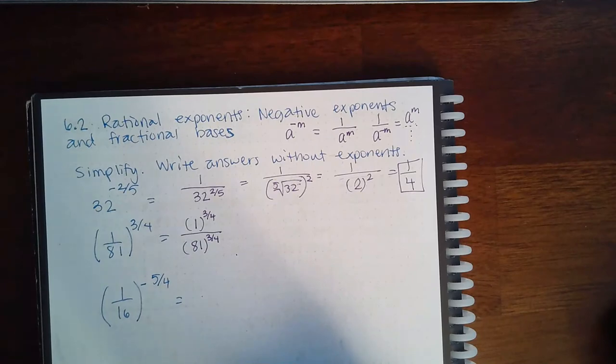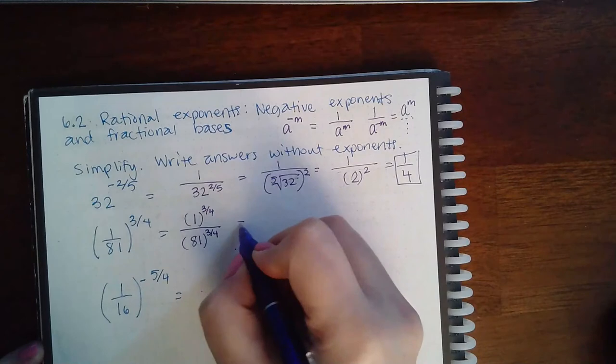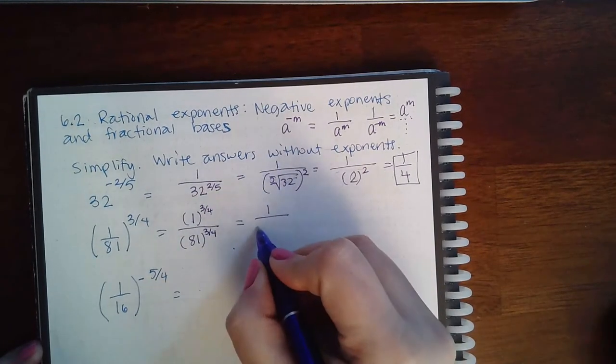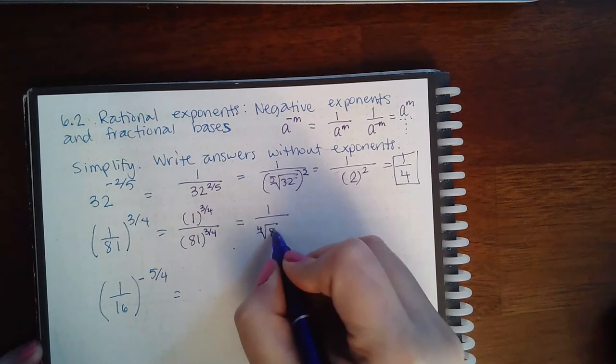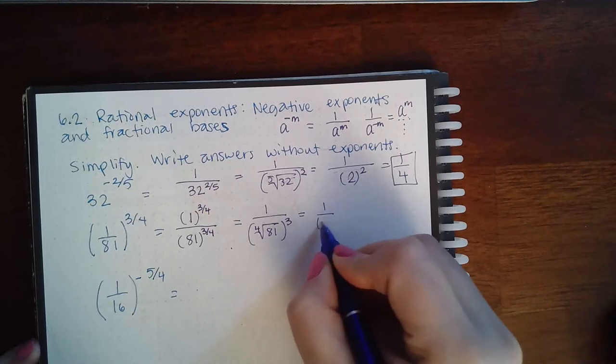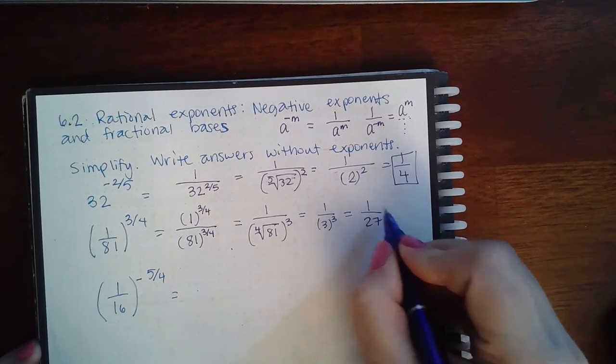So 1 to any power is 1, but here we're going to have to do the fourth root of 81 and then all raised to the third power. The fourth root of 81 is 3. If we raise that to the third power, we get 1 over 27.